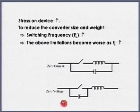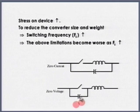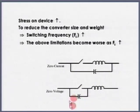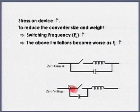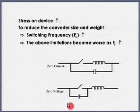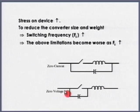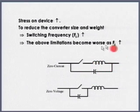Similarly, here I have connected a small capacitor. When the capacitor is completely discharged, I will turn it on. We know the voltage across a capacitor cannot change instantaneously - when I turn off the device, voltage across the capacitor will gradually rise. So this is known as zero voltage switching. I am reducing the rate of rise of voltage here and controlling the rate of rise of current through the device - hence the name soft switching.